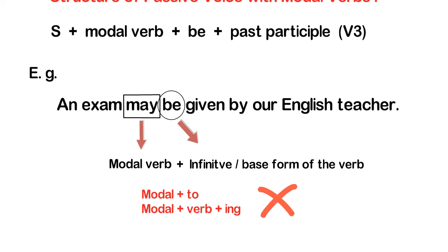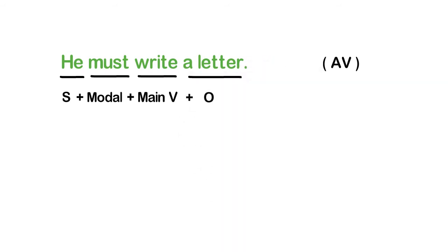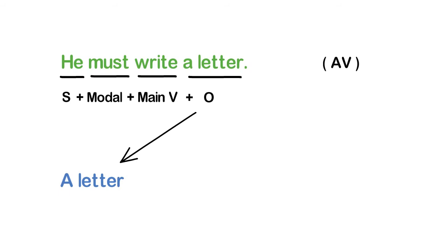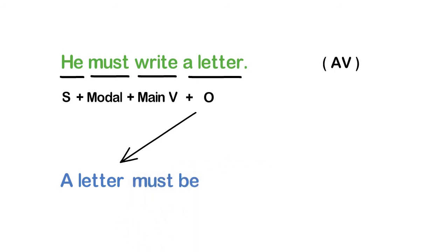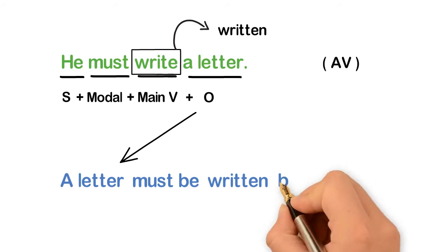Now let's change an active sentence with a modal verb into passive. 'He must write a letter' — subject + modal + main verb + object. First, the object of the active sentence becomes the subject of the passive sentence. Then we add modal verb + be. Afterwards, we look at the main verb and use its third form or past participle. Finally, we mention the agent through a 'by' phrase if necessary.